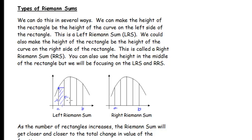Continuing with the left Riemann sum: on the second rectangle, the height on the left side is lower, the height on the right is way up higher, so the rectangle is drawn to the left height. Similarly, the third rectangle uses the left height, and the fourth rectangle uses the left height. Notice that sometimes we miss a little area, and sometimes we add a little extra area — it depends on the shape of the curve whether you're underestimating or overestimating.